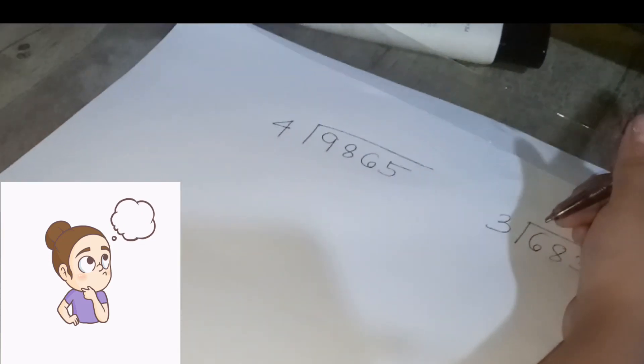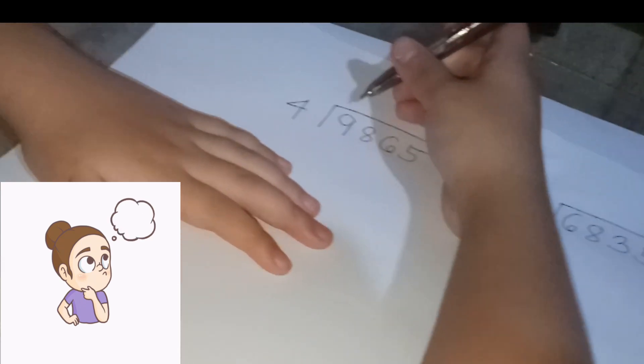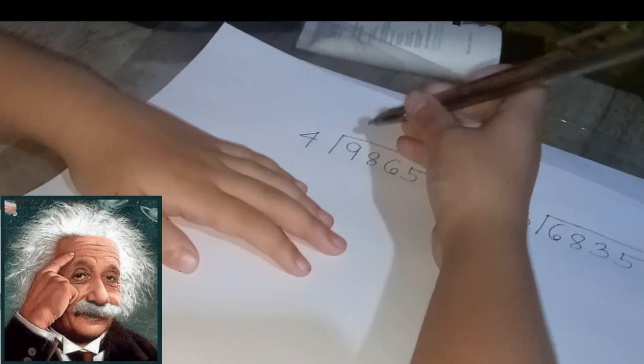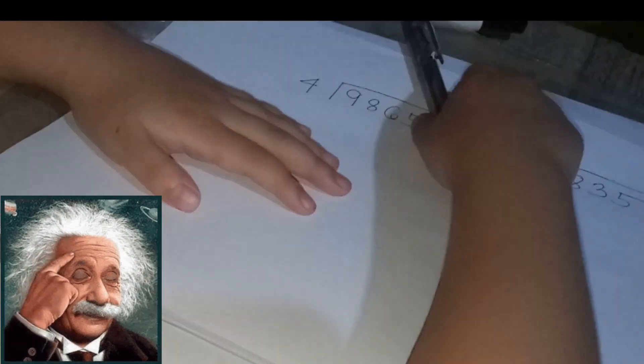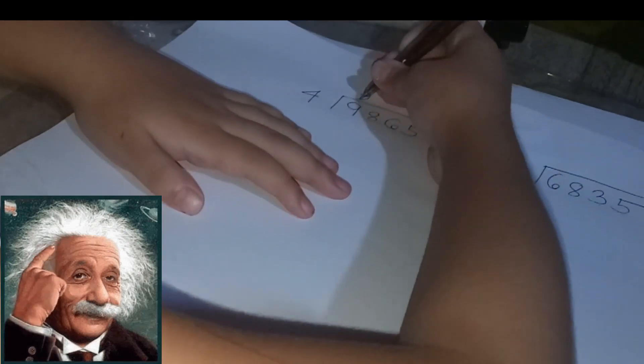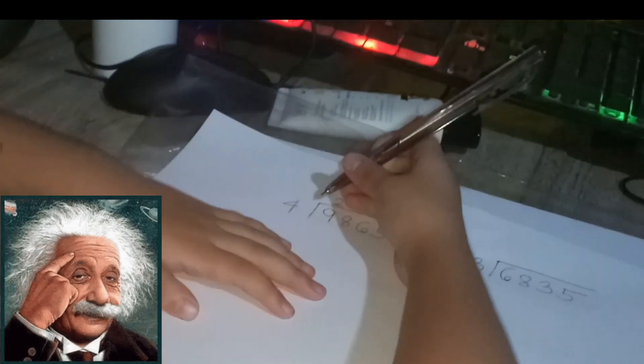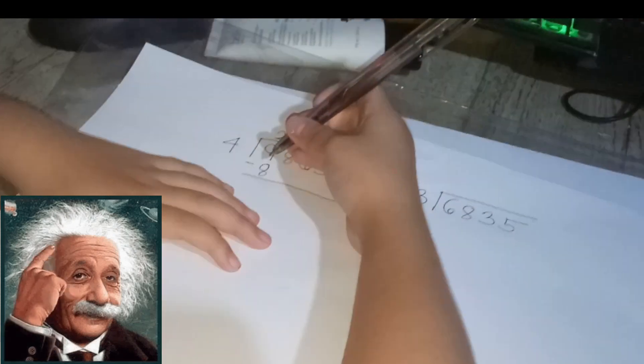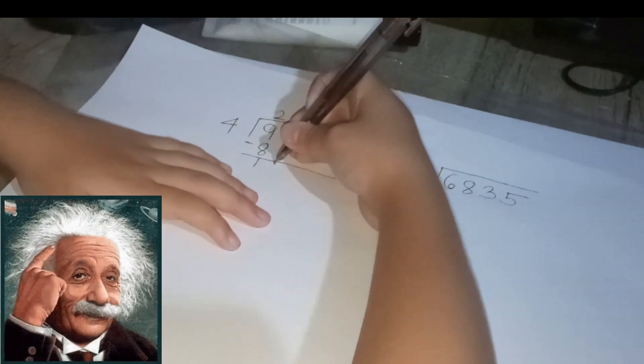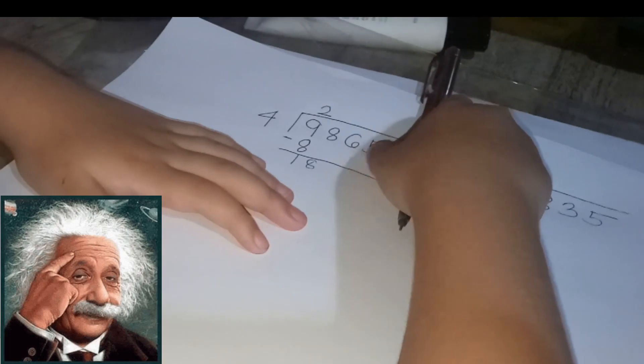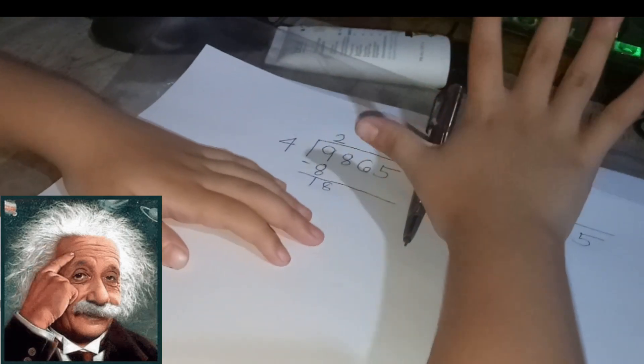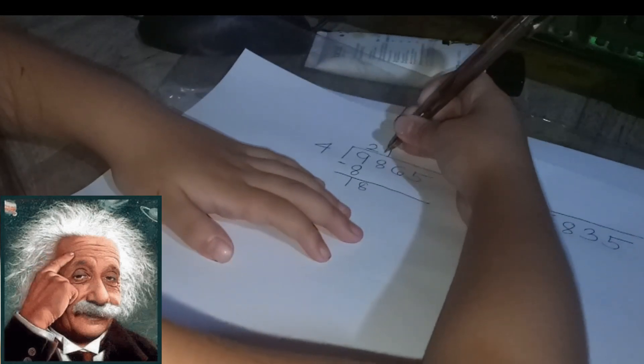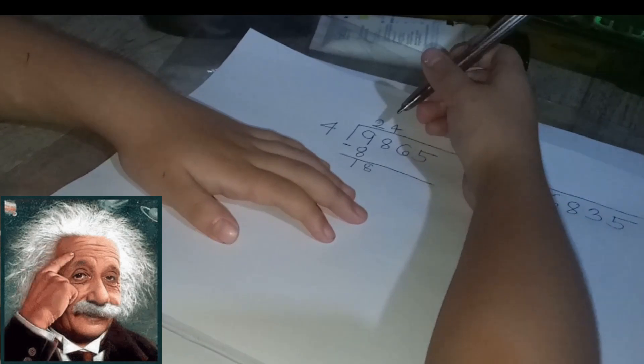So we're dividing four digits divided by only one digit. The first number is 9865 divided by only 4. So 9 divided by 4 is 2. Only two times four is eight. Nine minus eight is one. So four, eight, twelve, sixteen, twenty... five, so it's wrong. So it has to be only four. So here, four times four is sixteen.